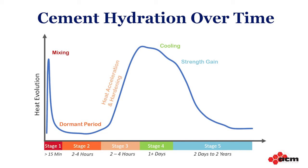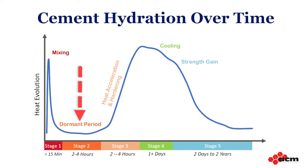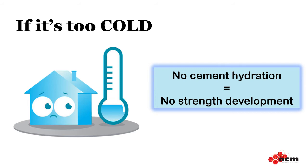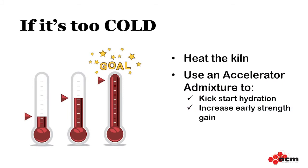You can watch our Concrete 101 videos on cement to learn more about the hydration process. Cement hydration needs a bit of heat to kick it off and then a few hours of dormancy while the cement particles and water interact. Ideally, we want our raw material and ambient temperatures in the plant between 60 and 95 degrees Fahrenheit, or 15 and 35 degrees Celsius. If it's too cold — say the aggregates and cement are 50 degrees Fahrenheit or 10 degrees Celsius — then the hydration process will not start, and the concrete units will not develop enough strength unless we take some additional action. This could include providing heat in the kiln or using an accelerating admixture, which helps kickstart the hydration process and increases early strength gain.